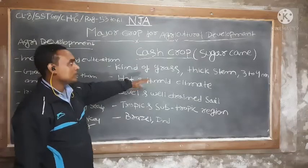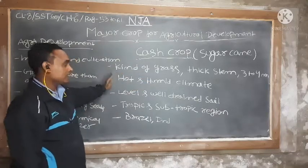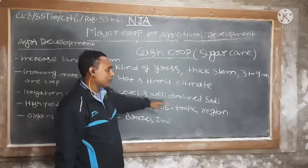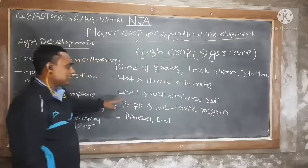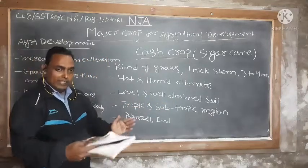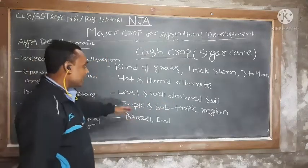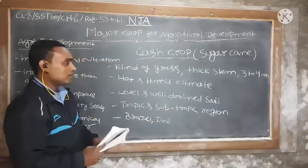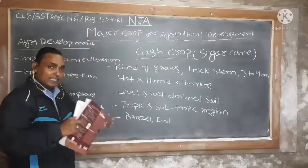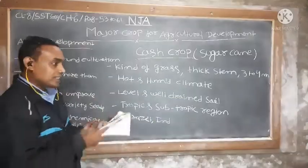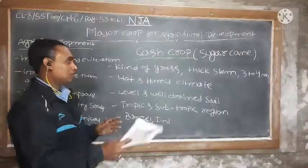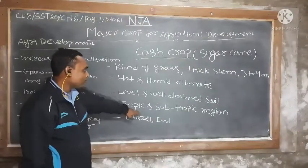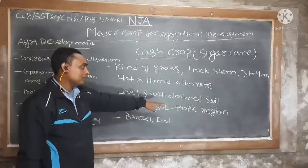For sugar products you need labor and well-drained soil. We need lean seed and well-drained soil. This crop is grown in tropical and sub-tropical regions.